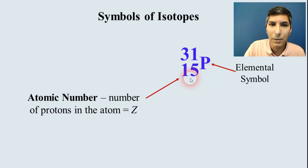The number on the bottom represents the atomic number, and that represents the number of protons in an atom. Sometimes we use the abbreviation Z to talk about the atomic number.